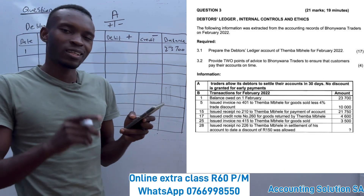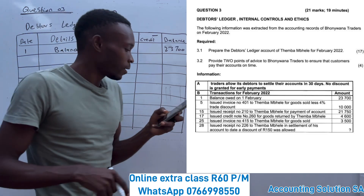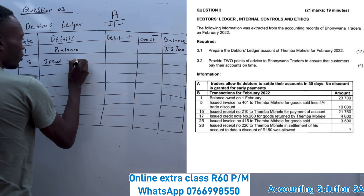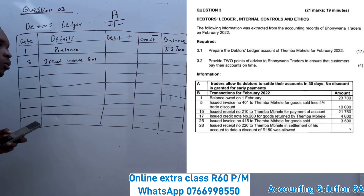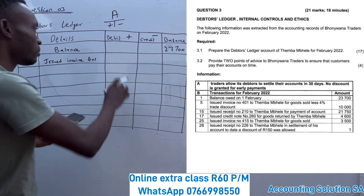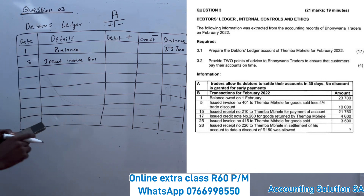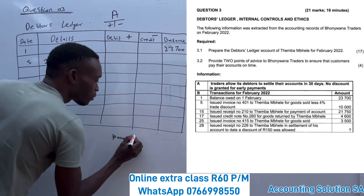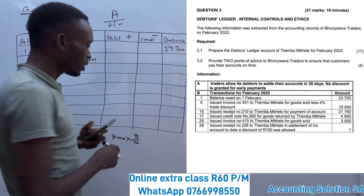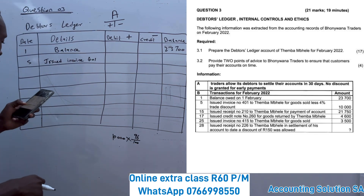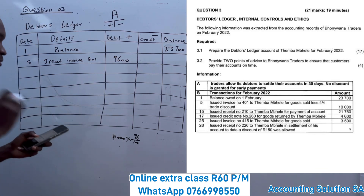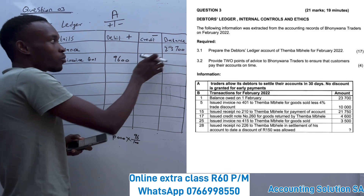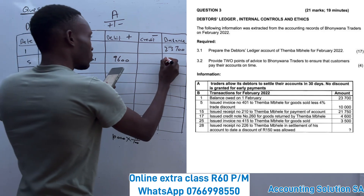They subtracted 4% discount, so the customer didn't pay the full R10,000. We calculate: instead of paying 100% of R10,000, he is going to pay only 96% — because 100 minus 4 equals 96. So 96% of R10,000 gives us R9,600. Since he purchased on credit, his debt increases, so we debit R9,600. Adding to the opening balance: R23,700 plus R9,600 gives a new balance of R33,300.